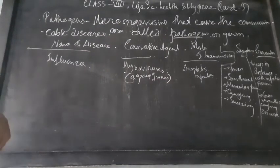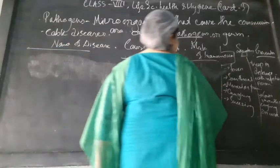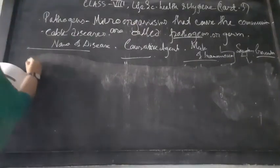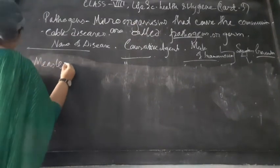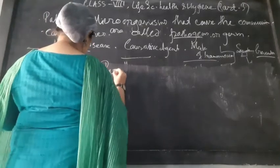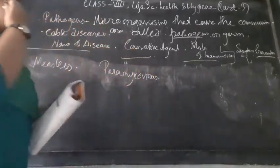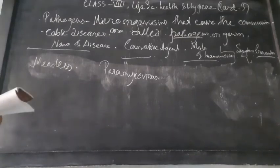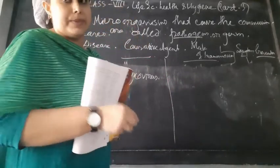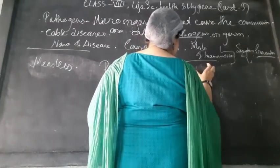The next disease is measles. The causative agent is Paramyxovirus. The mode of transmission is also droplet infection, similar to influenza.